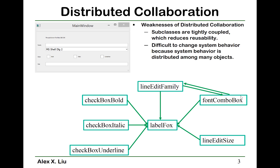Let's take a look at this example again. The weakness of distributed collaboration is that every subclass is tightly coupled, which will reduce usability. For example, in this application we have seven objects: checkbox bold, checkbox italic, checkbox underline — these are the object names — line edit family, label fox, font combo box, and line edit size.